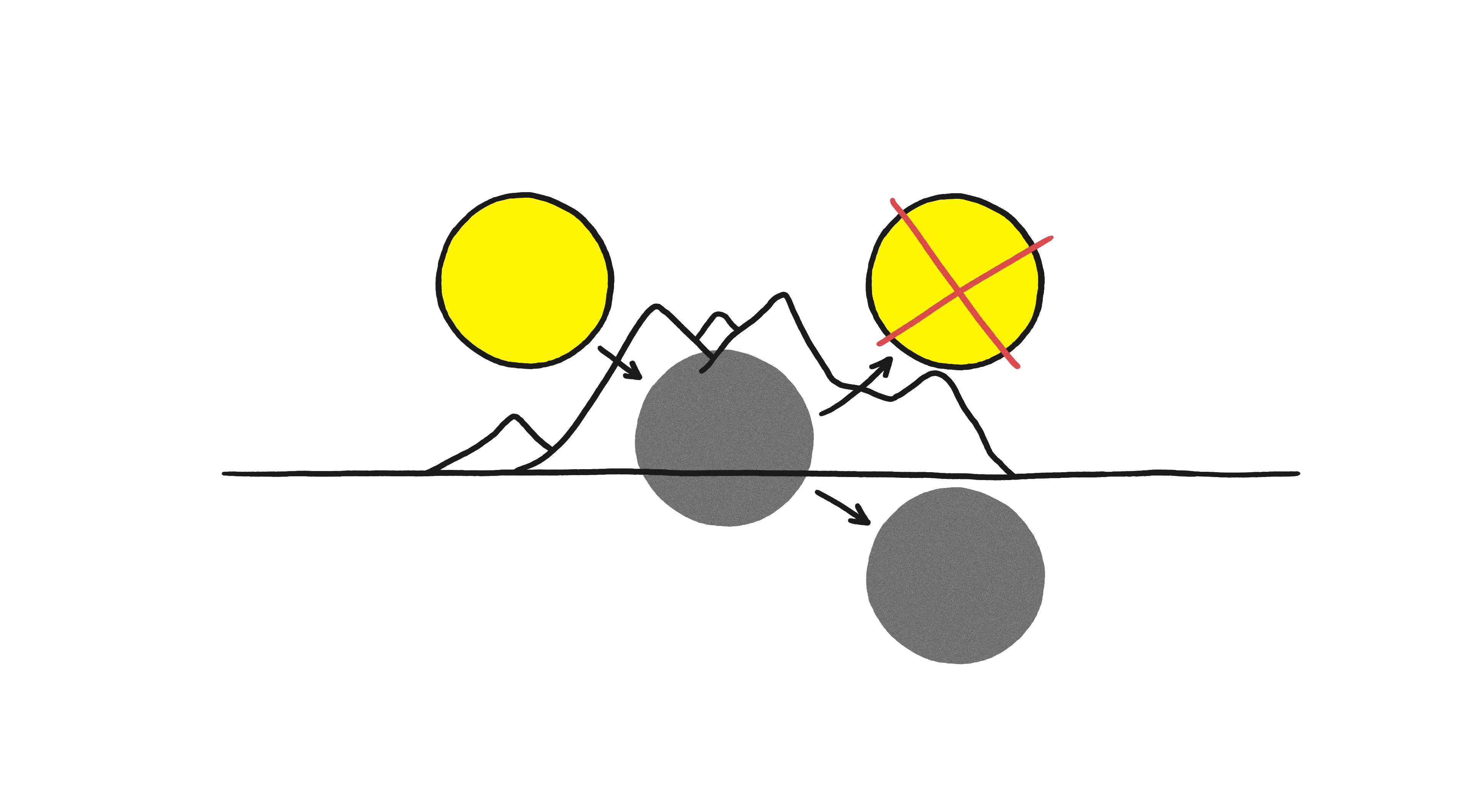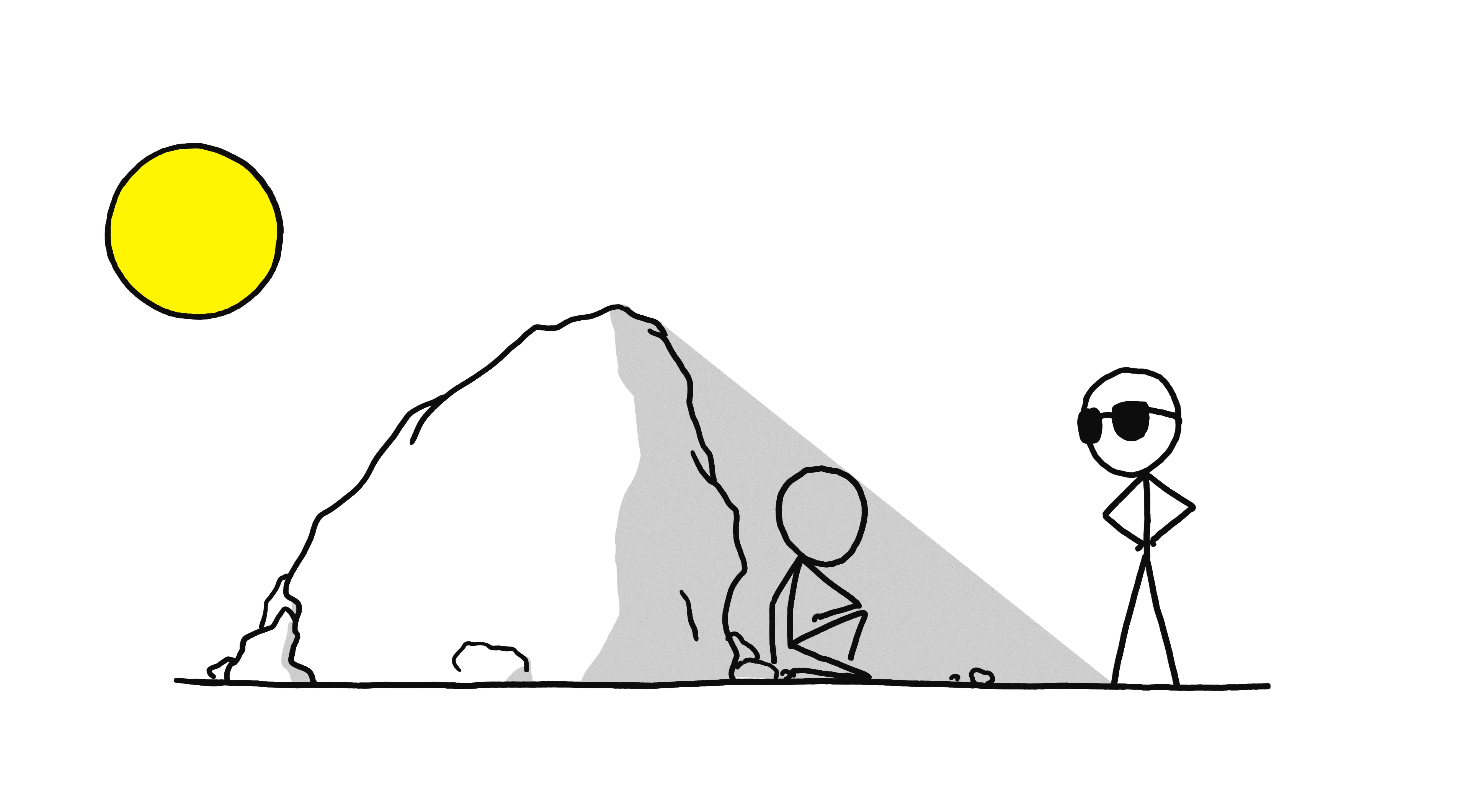For a sunset to count, the sun also can't just disappear behind a nearby hill. It needs to set behind the idealized horizon. Otherwise, if you could use arbitrary obstacles like that, you could cause a sunset whenever you wanted just by hiding behind a rock.